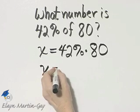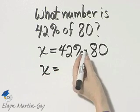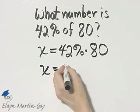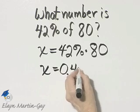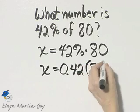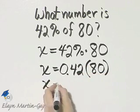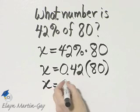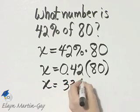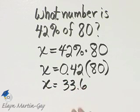Notice this equation is already solved for x. I'll write 42% as an equivalent decimal, and that's 0.42 times 80. If you simply multiply these two numbers, you'll have 33.6. So what number is 42% of 80? It is 33.6.